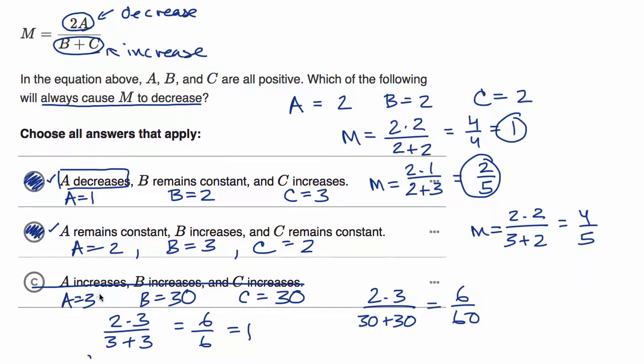For example, if you said A equals 300 while B and C are only increased to 30, well then this would become 600 here. The general principle here is if you increase everything, you don't know whether it's actually going to increase, decrease, or make M stay the same.